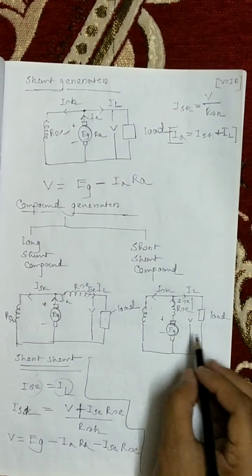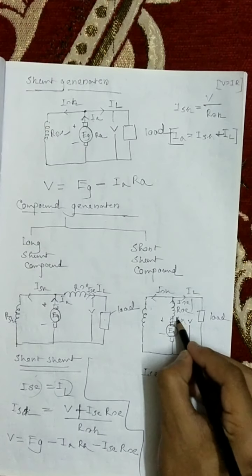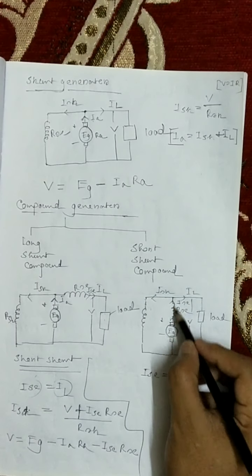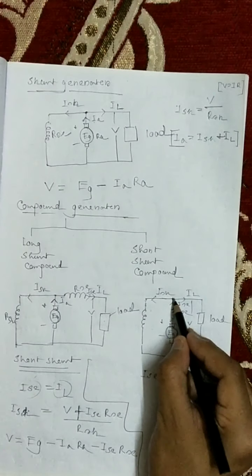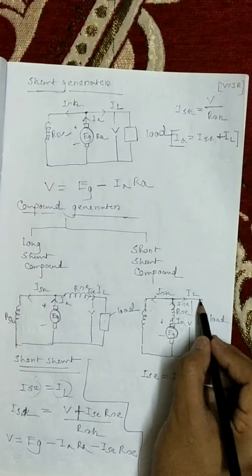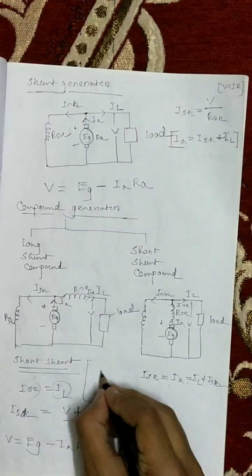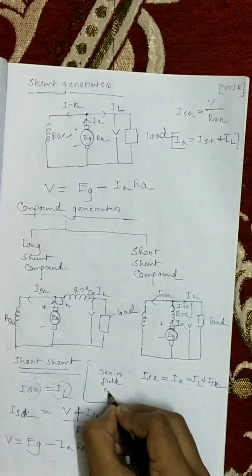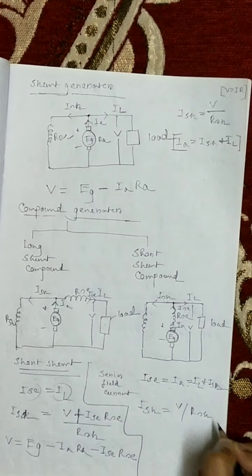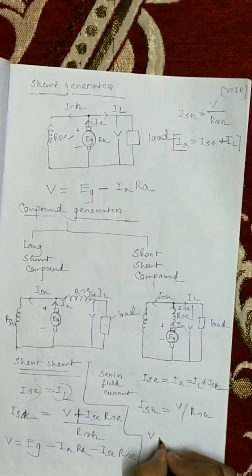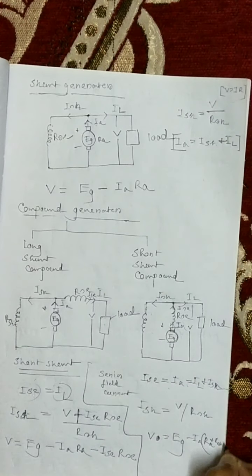For long shunt compound, ISE equals to IA, because the armature current and series field winding are in series. The armature current IA equals to IL plus ISH, as the current splits between the shunt field winding and the load. Shunt field current ISH equals to V divided by RSH, according to Ohm's law. The terminal voltage V equals to EG minus IA·(Ra + Rse).